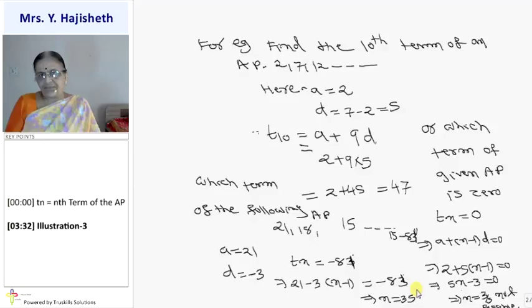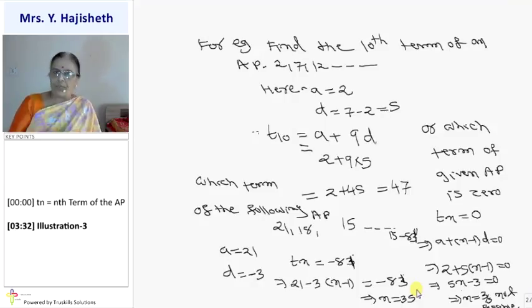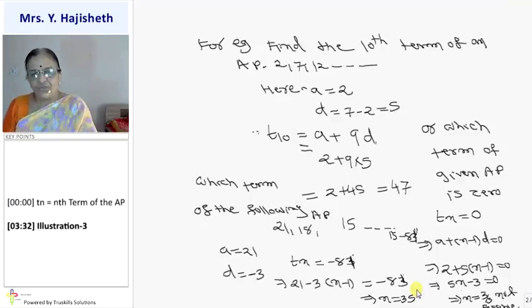Which term of the following AP, that is 21, 18, 15 dash dash dash, is minus 81? So A is 21, D is minus 3. Number adjust karna padega. So Tn is minus 81. So 21 minus 3 in bracket N minus 1 is minus 81. So 24 minus 3N is minus 81. So 3N is 24 plus 81. So that is 105. 3N is 105, so N will be 35. You can try on your own.